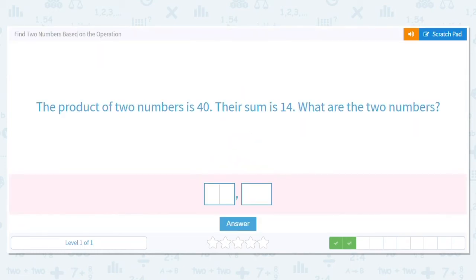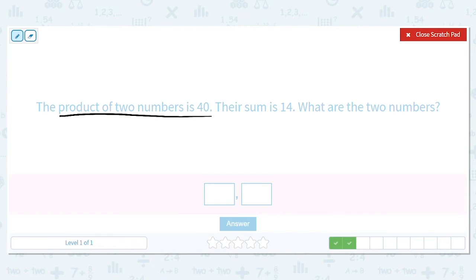All right, next one. The product of two numbers is 40 and their sum is 14. What are the two numbers? So again, the product of two numbers is 40, and then when you add them, it equals 14.